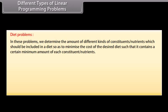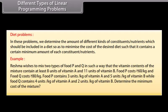Diet problems: in these problems we determine the amount of different kinds of nutrients which should be included in a diet so as to minimize the cost, such that it contains a certain minimum amount of each nutrient. Example: Reshma wishes to mix two types of food P and Q so that the mixture contains at least 8 units of vitamin A and 11 units of vitamin B. Food P costs Rs. 60 per kg and food Q costs Rs. 80 per kg. Food P contains 3 units/kg of vitamin A and 5 units/kg of vitamin B; food Q contains 4 units/kg of vitamin A and 2 units/kg of vitamin B. Determine the minimum cost of the mixture.